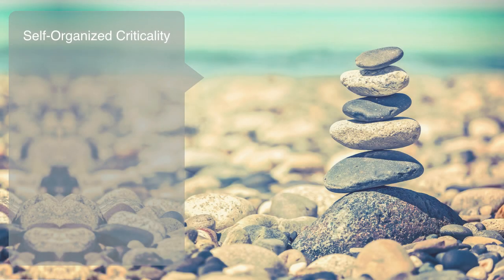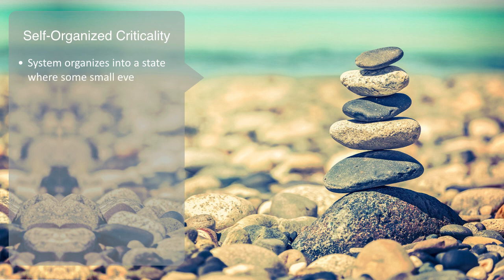But self-organization doesn't always lead to robustness. It can also lead to what is called self-organized criticality, where the system organizes into a state where some small event can have a large systemic effect. This phenomenon is best described with reference to what is called the sand pile model.